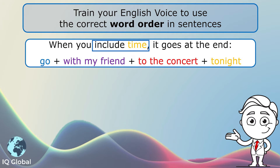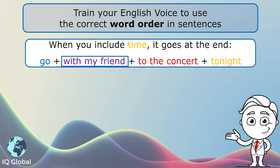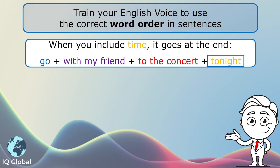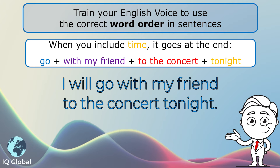When you include time, it goes at the end of the sentence. Let's put it all together in the correct word order: the verb 'go,' then the object 'with my friend,' then the place 'to the concert,' and then the time 'tonight' at the end. So I could say: 'I will go with my friend to the concert tonight.' That is the correct word order when talking about times and places.